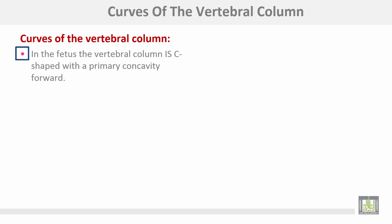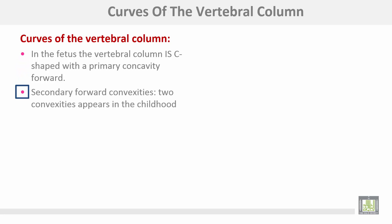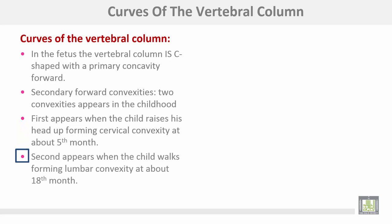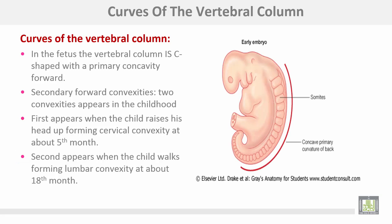The curves of the vertebral column: in the fetus, the vertebral column is C-shaped with a primary concavity forwards. Two forward convexities appear during childhood — the cervical convexity appears when the child raises the head at about the fifth month, and the lumbar convexity appears when the child walks at about the eighth month.